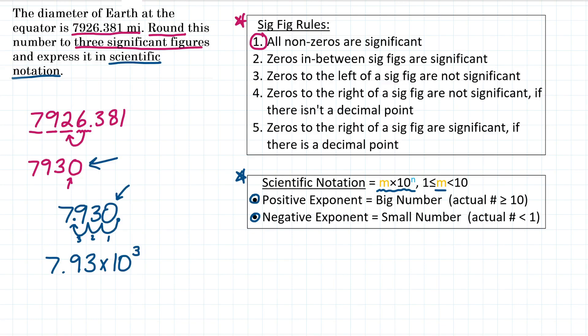Well, it is a big number because it is greater than or equal to 10. So 7,930, that's a big number. So our scientific notation is for a big number, which means the exponent must be positive. So we're going to keep our power as positive 3.